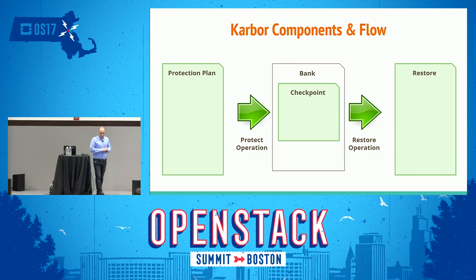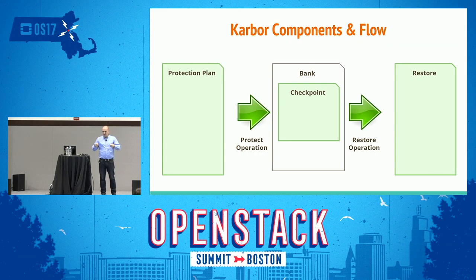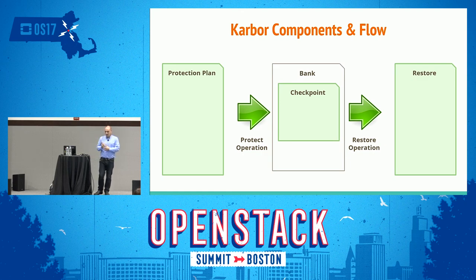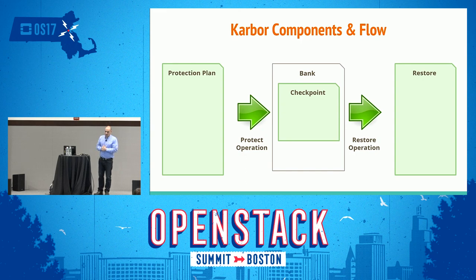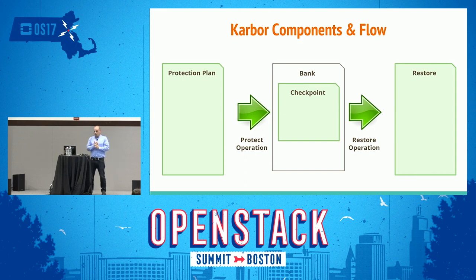The basic flow: you start with a protection plan, built by the admin and set up by the tenant, who decides what to protect. Then there's a protect operation, which creates a checkpoint in the bank — a checkpoint is basically a group of all the data that constitutes your backup. And there is the restore operation: whenever you want, you go to the Carbo service, point it to the bank where you've been keeping your checkpoints, and restore it to rebuild the project.